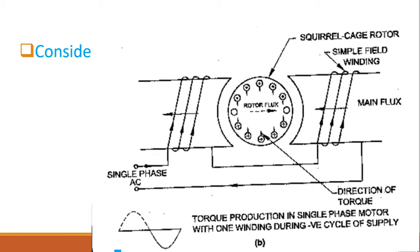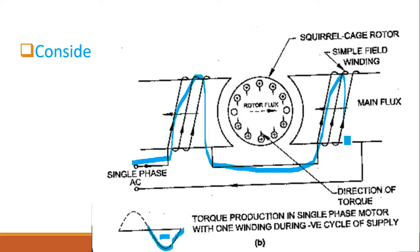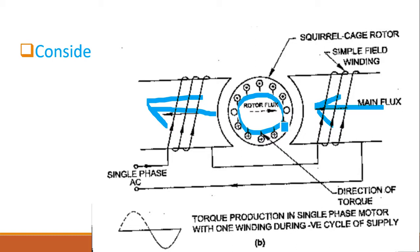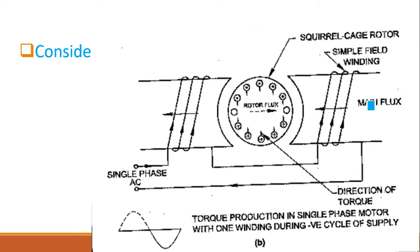Now considering the negative half cycle: the flux goes from zero to negative maximum and back to zero. The current in the main winding is reversed — opposite to the previous direction — hence the main flux is also reversed. The rotor EMF is again induced as the flux changes from zero to maximum and back. The rotor EMF creates a rotor flux opposite to the main flux, now reversed in direction.